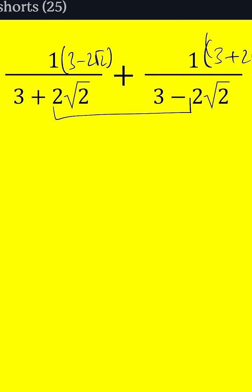But let's focus on the numerators first. We're multiplying by 1, so it's going to be 3 minus 2 root 2, divided by the common denominator, which is the product of these two things.